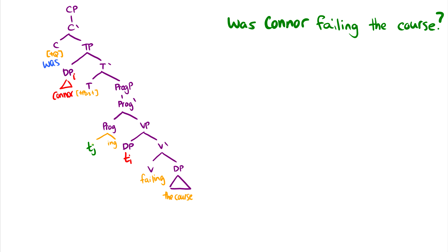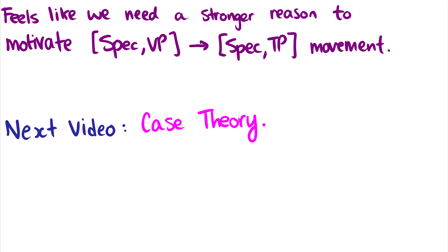And that moves up to T. And then we have was Connor failing the course, and it should be a J. Okay, so that is movement in trees. But it's really not too satisfying to just say, well, spec VP goes to spec TP. There's word order differences. So we're going to introduce case theory in the next video. And that will motivate things a little bit further. And then we can see how subjects and objects come into play. And there is some connection between theta roles, subjects and objects that we can explore using case theory. So if you have any questions, please leave them in the comments below. And I will answer them as quickly as I can.